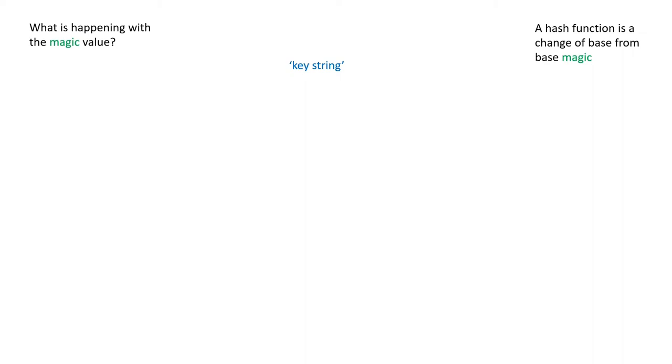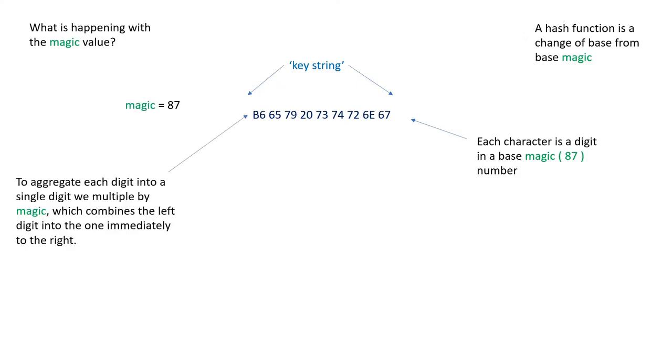Take a string or a set of characters. Each of these characters can be represented by a hexadecimal digit. Each of these hexadecimal digits can be considered to be part of a number that is our magic number. In this example, we're using hexadecimal 87 as our number base. The hash function is simply aggregating these digits, which we consider to be hexadecimal base 87, into a single hexadecimal number.